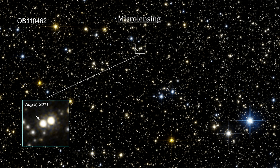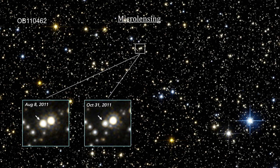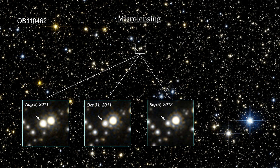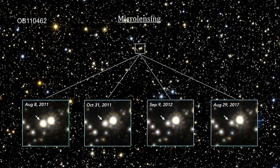In this image, we see a star that measurably brightened, as first captured by Hubble beginning in August 2011. This brightening was caused by a dark lens identified as OB-110462 that drifted in front of the star. The background star both brightened and shifted in its apparent position. After over 200 days, it faded back to its normal brightness and position.